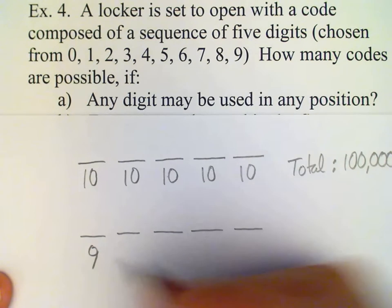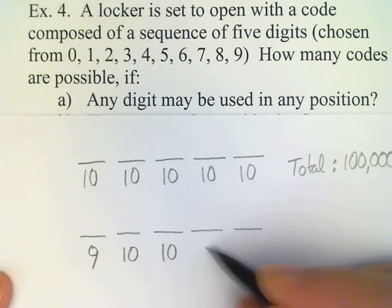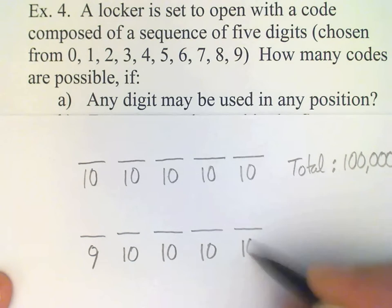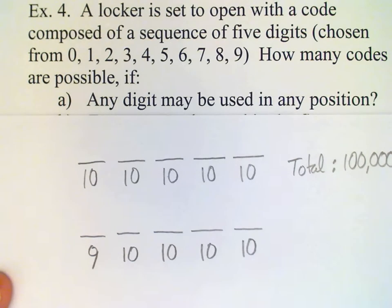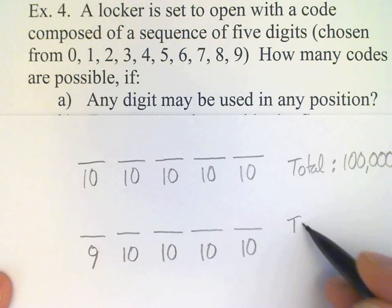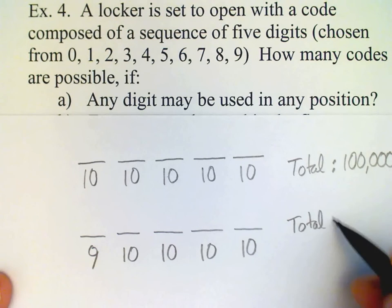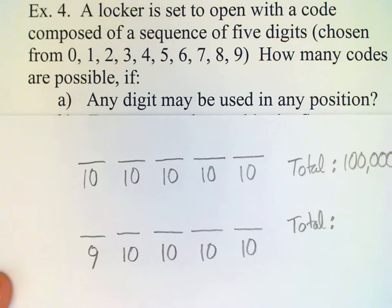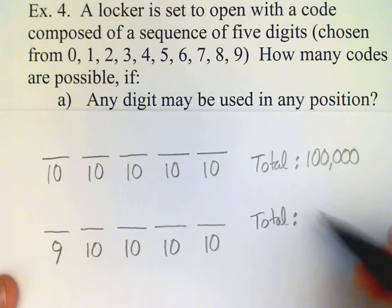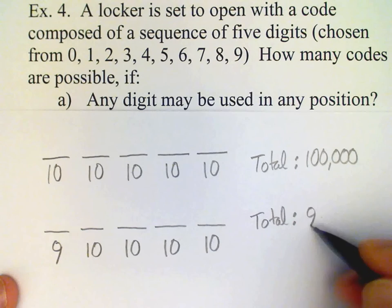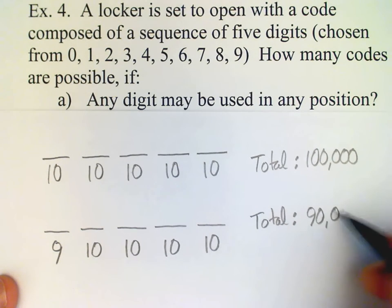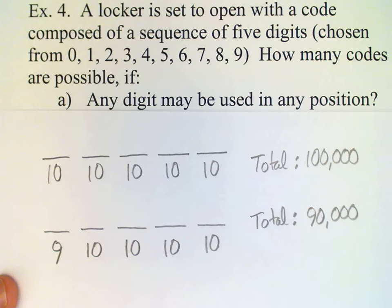No restriction on the others, so we still have tens for each of those slots. But now look and see what happens to our total. With just that one little restriction, that reduces our number of possibilities in the total by ten thousand codes.